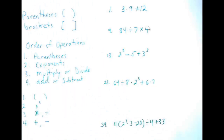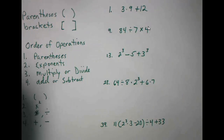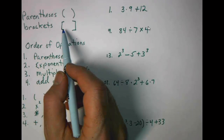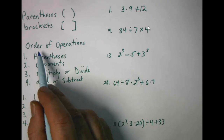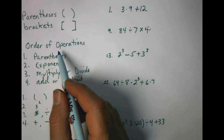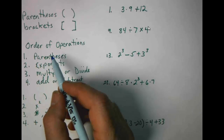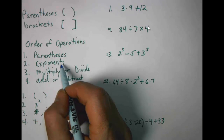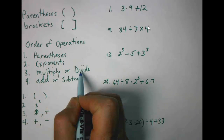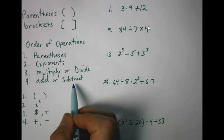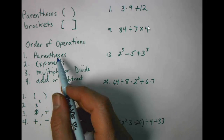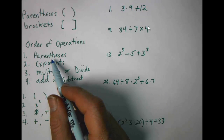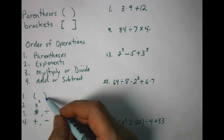Our vocabulary for section 1.6 is parentheses, which look like this, brackets, and order of operations. The order of operations has a set of rules. Operationally it looks like this: we're looking for brackets, exponents, multiplication or division, and then plus or minus — addition and subtraction.